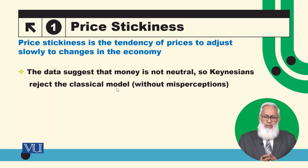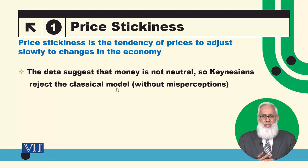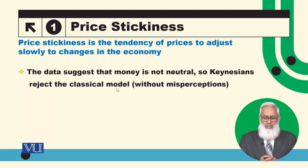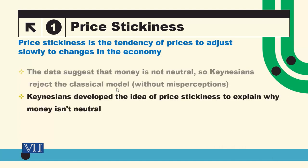The data suggests that money is not neutral, so Keynesians reject the classical model. Empirical evidence shows that money is not neutral. The classical response was that producers have imperfect information — the misperception theory. But Keynes was not convinced. He developed the idea of price stickiness to explain why money is not neutral.